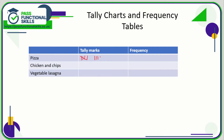What we would do now is add a frequency column. In the frequency column we just add up the tally marks — so five plus five plus three: five, ten, eleven, twelve, thirteen. That means thirteen children chose pizza. Five, six, seven, eight, nine chose chicken and chips. And vegetable lasagna: five, ten, fifteen, sixteen, seventeen. The total of the frequency should equal the number of children you asked, assuming they all gave a response.